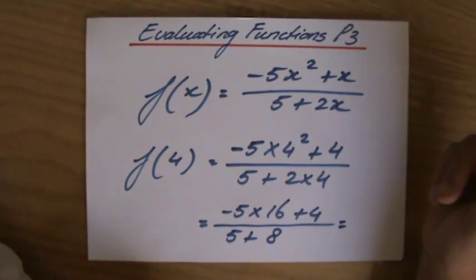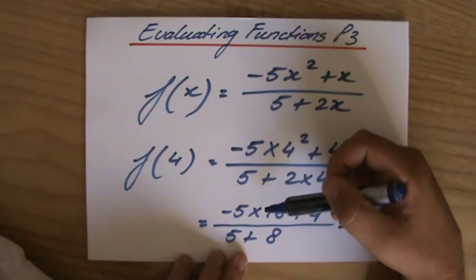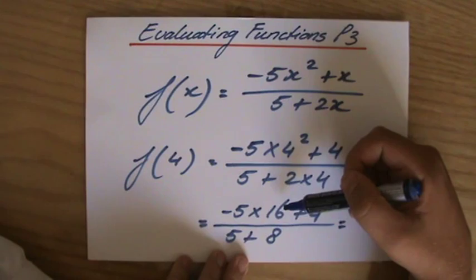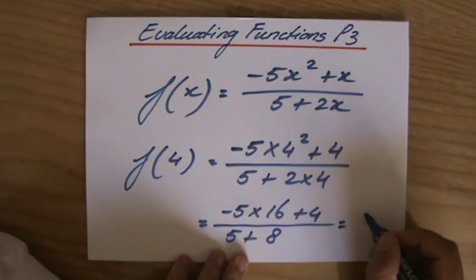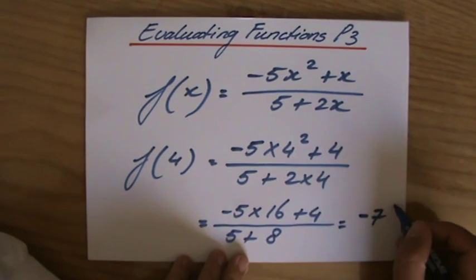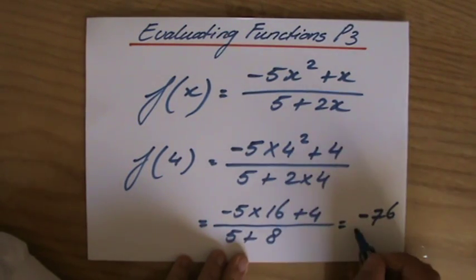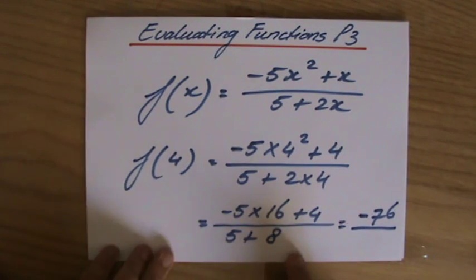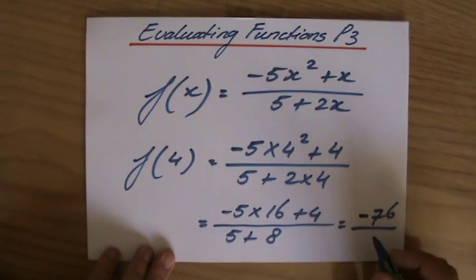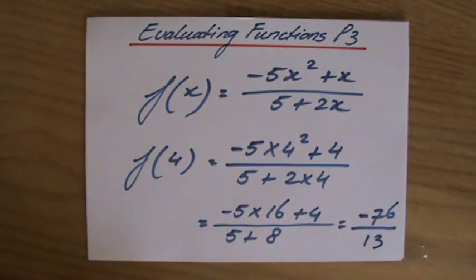Now perhaps some of you need a calculator for that. That is going to be minus 80. And minus 80 plus 4 is minus 76. Over, and then perhaps you use a calculator for the denominator. However, 5 plus 8, you are expected to be able to find out that that is 13.